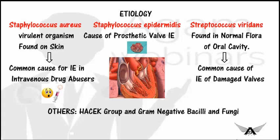Certain organisms are associated with certain conditions. Staphylococcus aureus infection is mainly seen in intravenous drug abusers; since the organism is mainly found on the skin, it enters circulation through a breached skin barrier. Similarly, Staphylococcus epidermidis is associated with prosthetic valve endocarditis — an artificial heart valve implanted to replace a dysfunctional native valve. When infection sets into this artificial valve, it is known as prosthetic valve endocarditis.